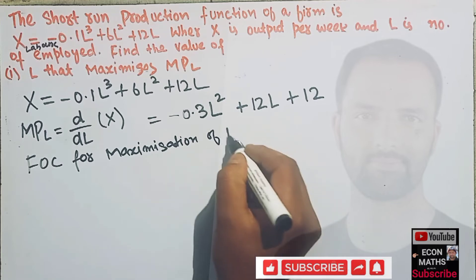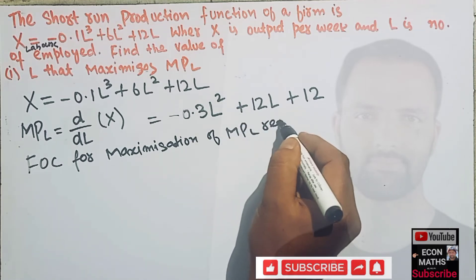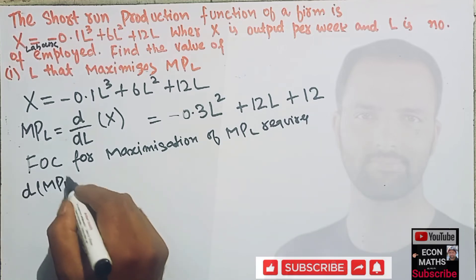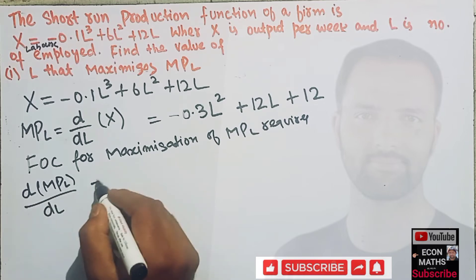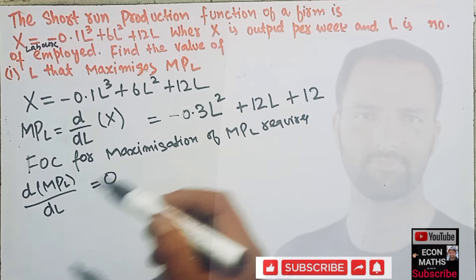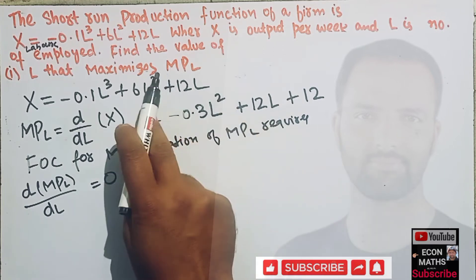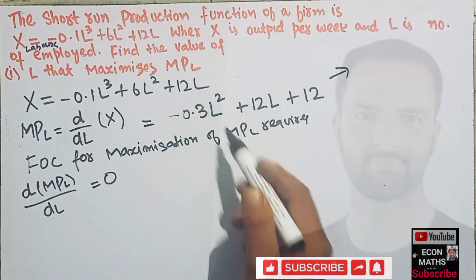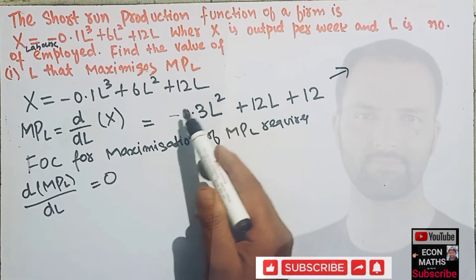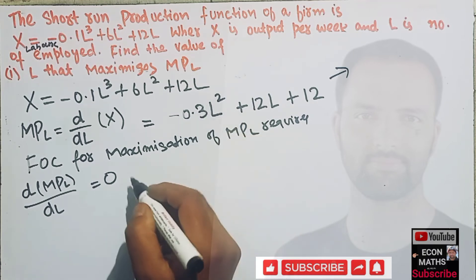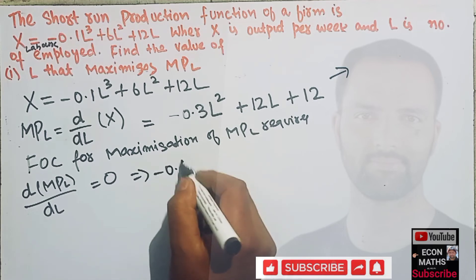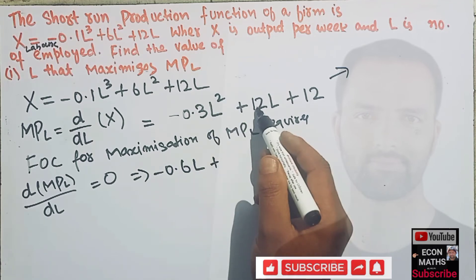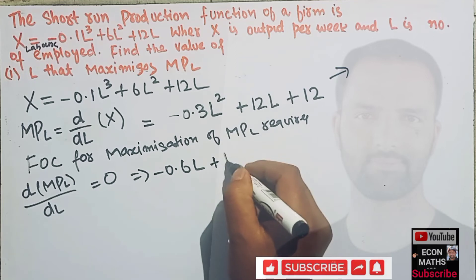Maximization of MPL requires that d(MPL)/dL equals zero. So we need to differentiate the marginal product of labor with respect to L. The derivative of minus 0.3L squared gives minus 0.6L, and the derivative of 12L gives 12. So we have minus 0.6L plus 12 equals zero.